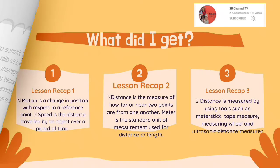What did I get today's lesson? We learned that motion is a change in position with respect to a reference point. Speed is the distance traveled by an object over a period of time. We learned also the distance is a measure of how far or near two points are from one another. And don't forget that the standard unit of measurement used for distance or length is called meter. Lastly we also learned that distance is measured by using tools such as meter stick, tape measure, measuring wheel and ultrasonic distance measurer.